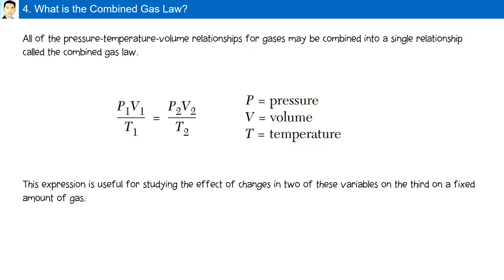What is the combined gas law? All of the pressure, temperature, and volume relationships for gases may be combined into a single relationship called the combined gas law. P1 V1 divided by T1 is equal to P2 V2 divided by T2. This expression is useful for studying the effect of changes in two of these variables on the third, or on a fixed amount of gas.